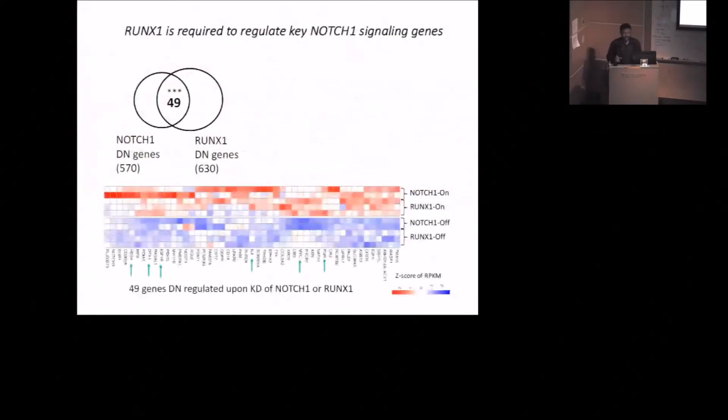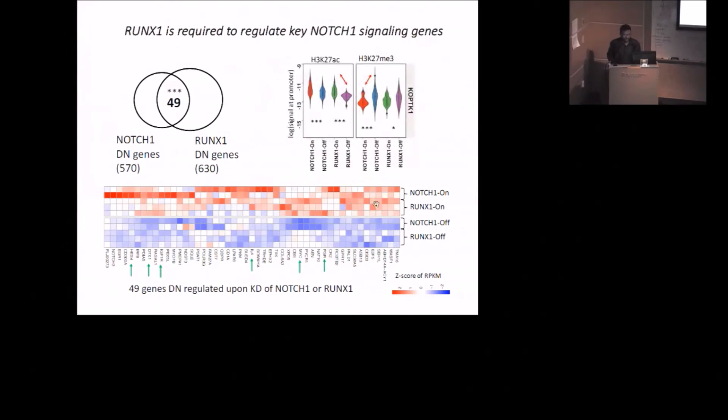To validate those synergistic histone modifications, we looked at gene expression. We found at least 49 genes are downregulated when we knock down either RUNX1 gene or NOTCH1 gene. This is telling that these 49 genes require both transcription factors at the regulatory regions. Here in the heat map, I plotted the expression of those genes. In the upper panel, the red showing these 49 genes is highly expressed in the control sample. In the knockdown sample, these genes have lost expression shown in blue. I marked some of the key NOTCH1 target genes which show loss of expression in absence of RUNX1 gene. I also looked at the promoter of those 49 genes. We see prominent loss of acetylation in the RUNX1 sample and gain of 27 trimethylation in the NOTCH1 sample.